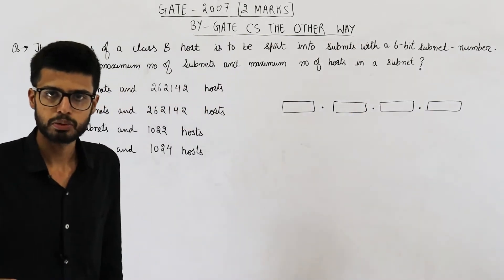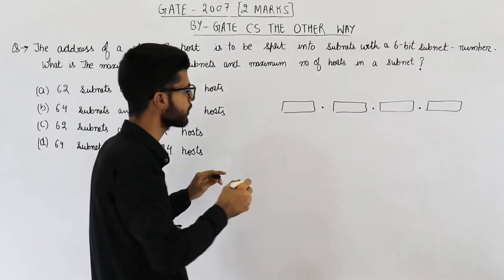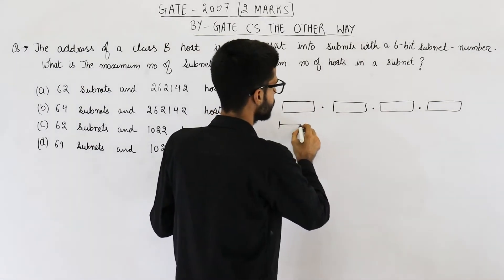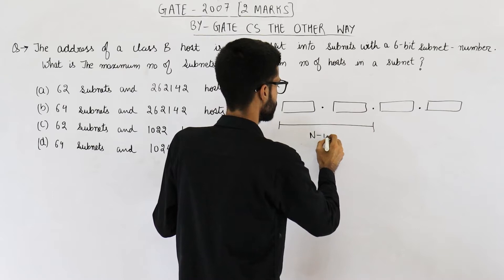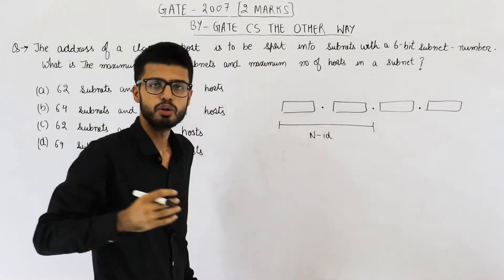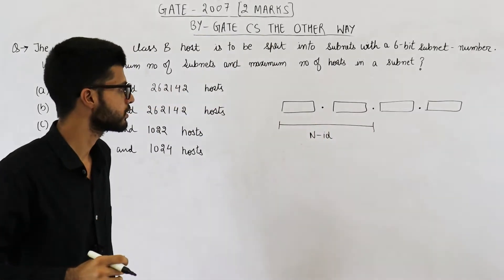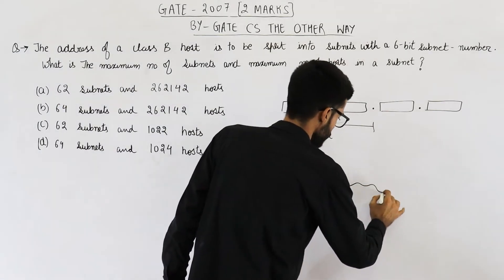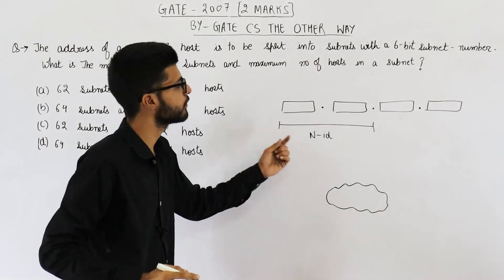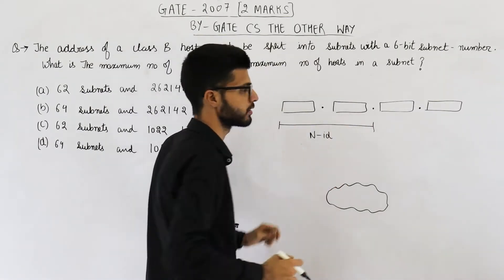So they are talking about class B. In class B, first two octets are the network ID. So this part is network ID. That means using 16 bits, we can identify this network. Suppose this is the network that they are talking about. So it can be identified using these 16 bits.